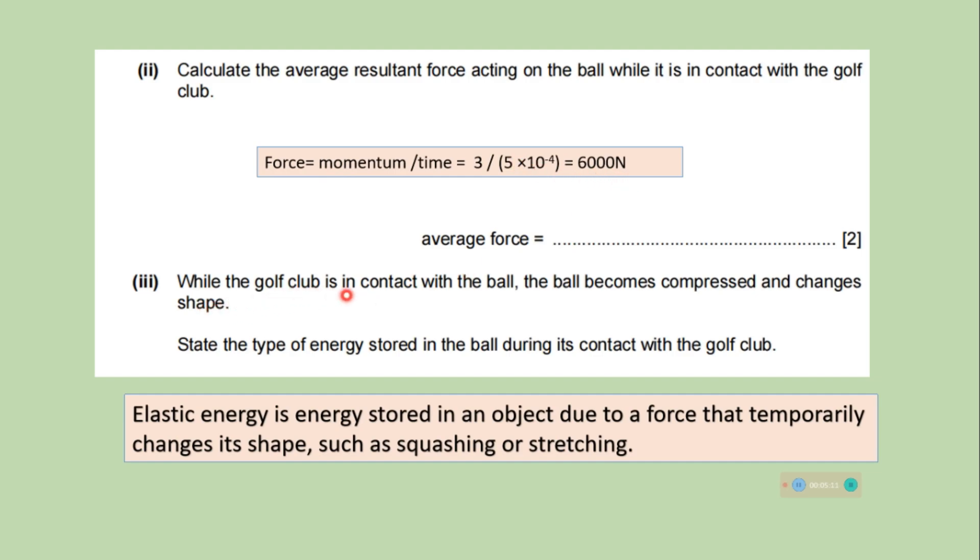While the golf club is in contact with the ball, the ball becomes compressed and changes shape. State the type of energy stored in the ball during its contact with the golf club. So elastic energy is energy stored in an object due to a force that temporarily changes its shape such as squashing or stretching. So elastic energy is the stored energy in the ball.